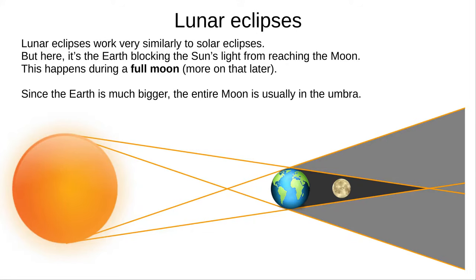Lunar eclipses are very similar, but happen during a full moon, when the Earth blocks the Sun's light from reaching the Moon. The Earth is much bigger, so the entire Moon is usually in the umbra.